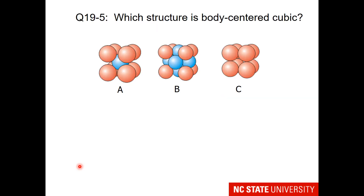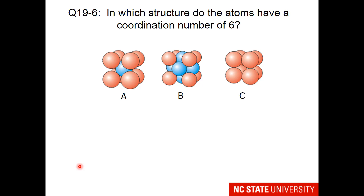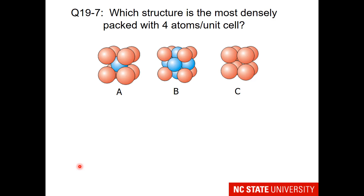Here are some questions for the student body: Which structure is body-centered cubic? In which structure do the atoms have a coordination number of 6? And which structure is the most densely packed with 4 atoms per unit cell?